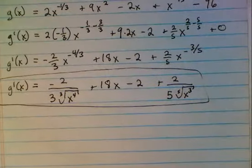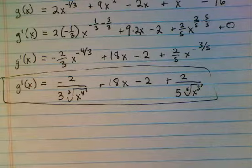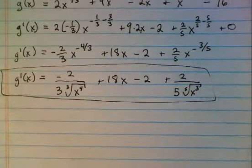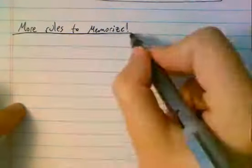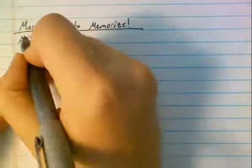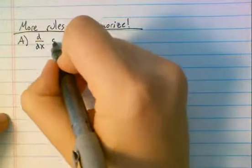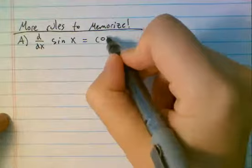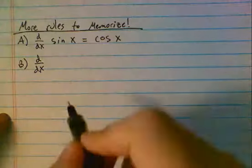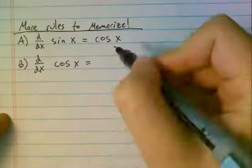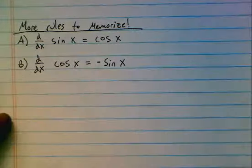Looks nasty, but it's just doing exactly what we were doing in the previous lecture. What we're going to do now is just add in new rules to memorize. There are only 4 of them, but they're ones that you really, really just have to know.